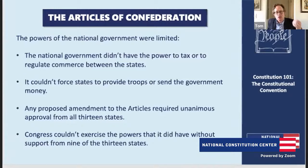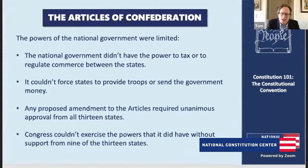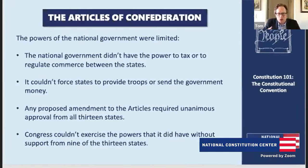What the founding generation is trying to do in Philadelphia is to thread an important needle. On the one hand, they want a government more powerful than the one created by the Articles of Confederation. But on the other hand, they still wanted a government of limited powers. They didn't cast off the British Empire in a Revolution concerned about abuses by a powerful government only to put a new, abusive, distant government in its place. The delegates are trying to thread that needle between the Articles of Confederation and the British Empire.